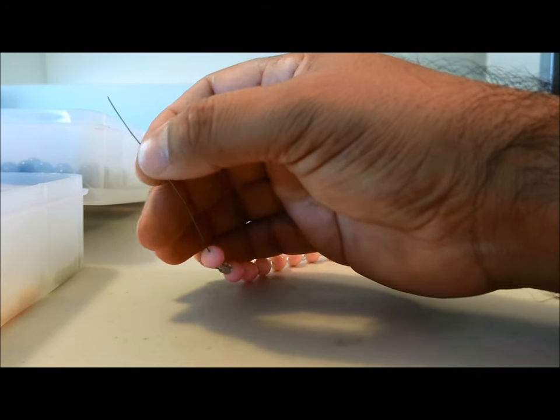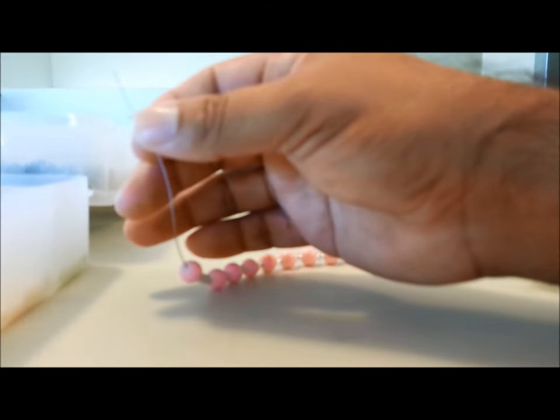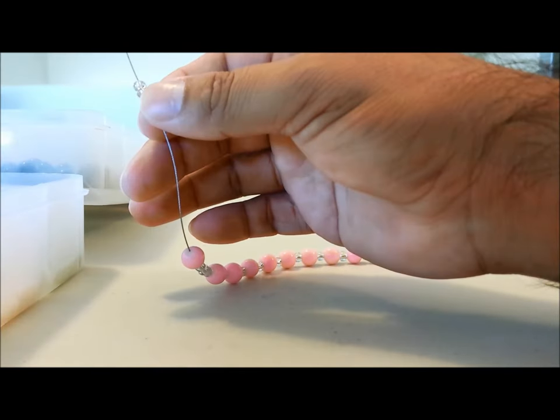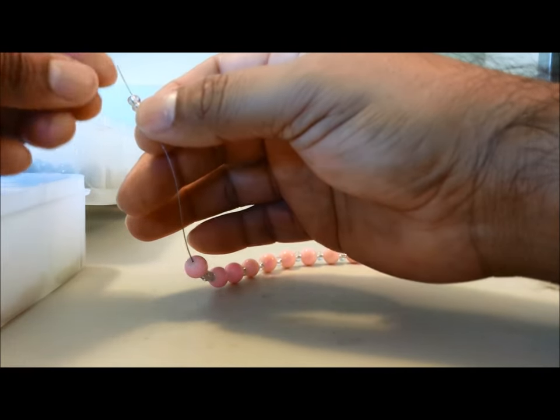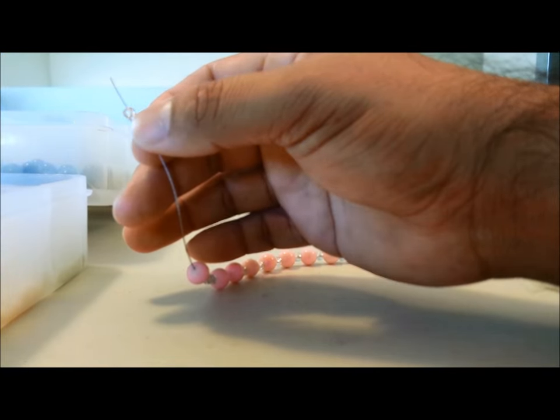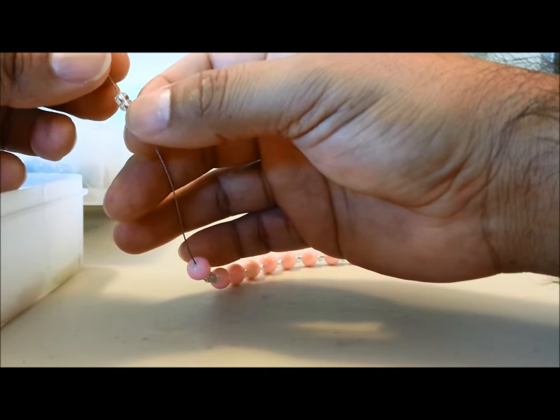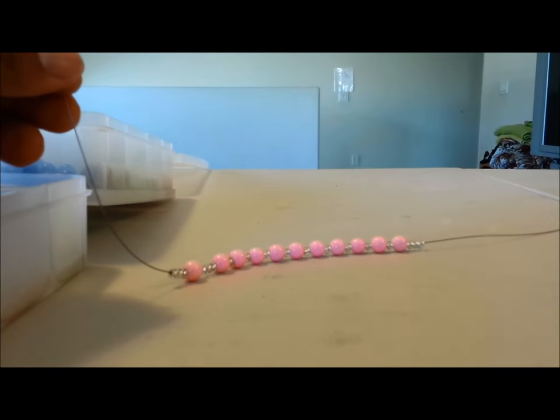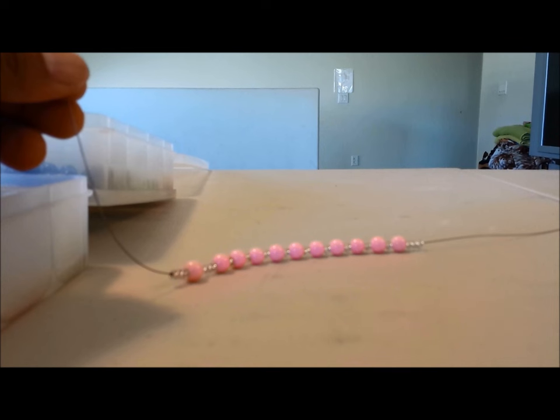So three fill beads, again, representing the Holy Trinity. That's just my thing. You can do the same or however you want to do it. One, two, three, and you're all set. Now, I'm going to make the rest of the decades along with the Paters for this strand, and we'll crimp it off and start the final strand for the rosary, and that'll be it.